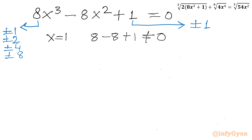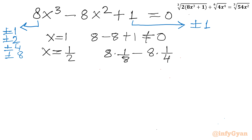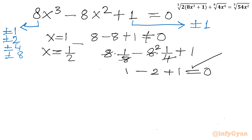Let me plug in x = 1/2. We get 8 × (1/8) − 8 × (1/4) + 1 = 1 − 2 + 1 = 0. Yes, this is true! So x = 1/2 is our base solution for this cubic equation. Now we need to find the remaining two solutions using synthetic division.